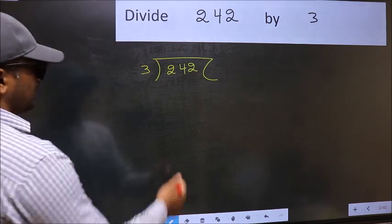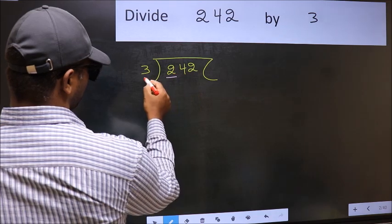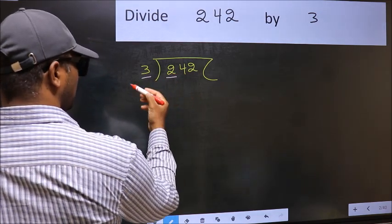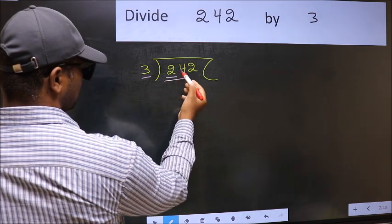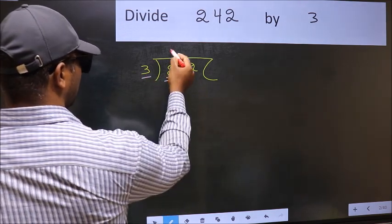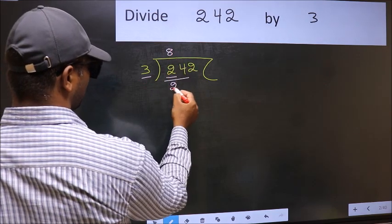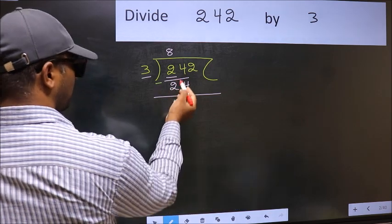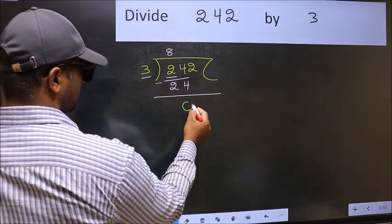Next, here we have 2 and here 3. 2 is smaller than 3. So we should take 2 numbers, 24. When do we get 24 in 3 table? 3 times 8 is 24. Now you should subtract. 24 minus 24, 0.